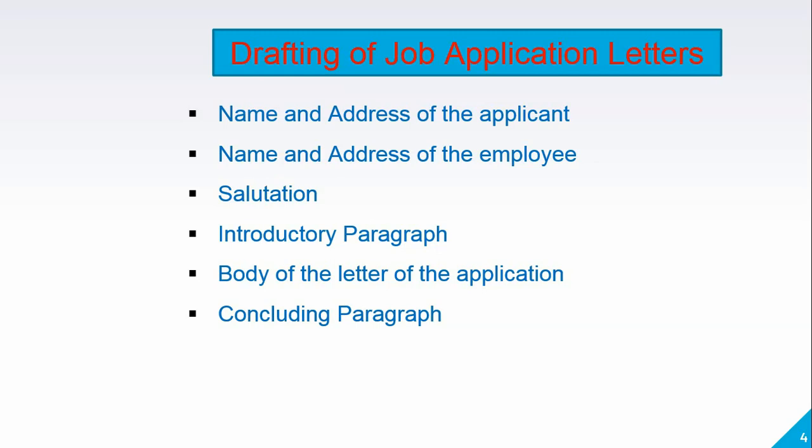When it comes to the body of the letter, here we need to write everything in a precise manner — your qualifications, when you acquired those qualifications, and what sort of skills you have. Everything you have to write in the body of the application letter. And the last one, the concluding paragraph: finally you have to conclude it by making a request to provide an opportunity to work in the organization. This is how you write a job application letter. So once again, whenever you write a job application letter, these six points are expected: name and address of the applicant, name and address of the employer, salutation, introductory paragraph, body of the letter, and concluding paragraph.